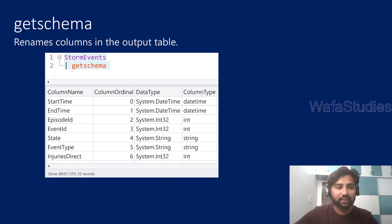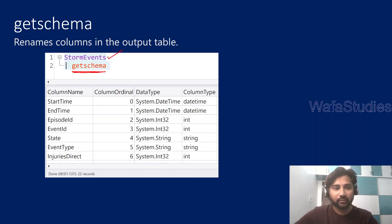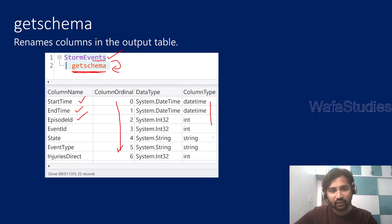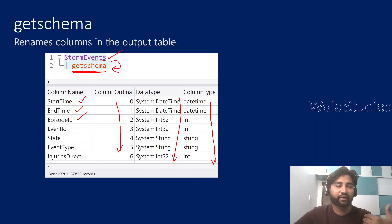The getschema operator helps you get the schema, as the name defines. That means, on top of any table, if you use this getschema operator, it is going to return all the columns in that table, the order of those columns, and the data types of those columns — including the normal .NET data types equivalent to those column data types.